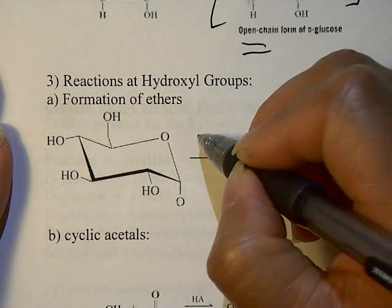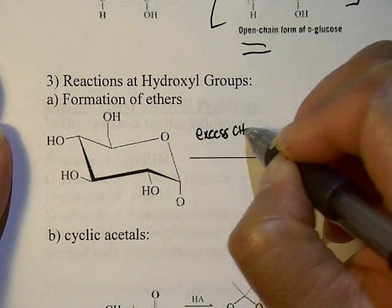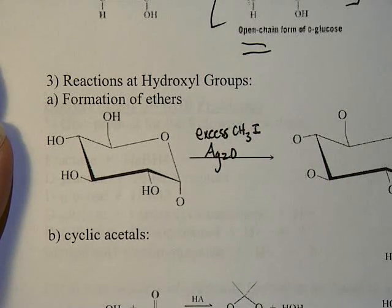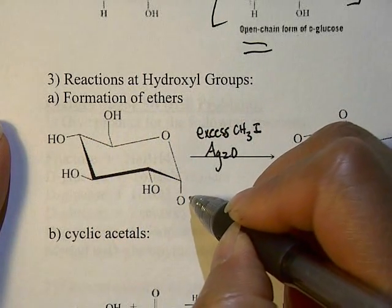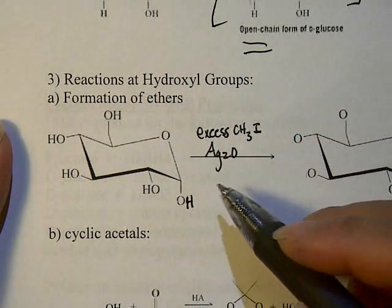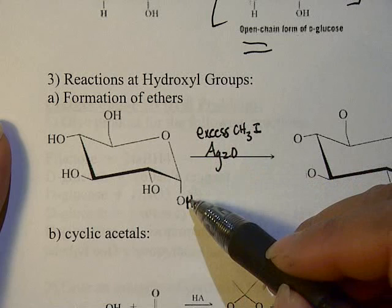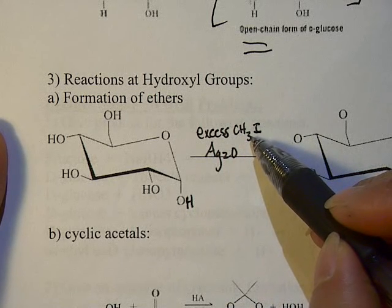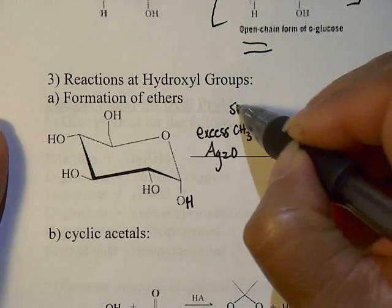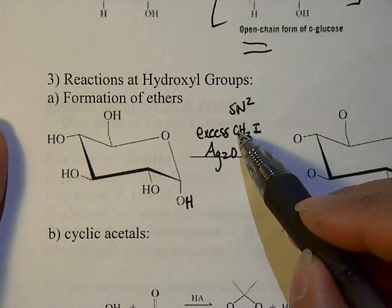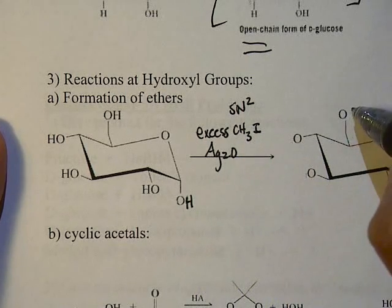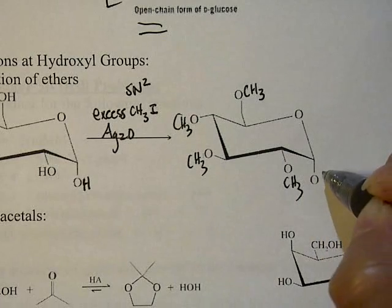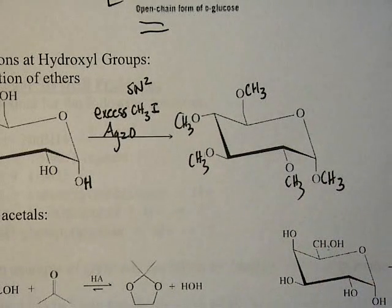One of the reactions in your book for forming ethers is using excess methyl iodide with silver oxide. Whatever monosaccharide you're working with, the silver oxide acts as a base to deprotonate the hydrogen, and then the methyl iodide — a very reactive, very dangerous alkyl halide — undergoes an SN2-type reaction where the oxygen attacks the methyl and kicks out the iodide. So all the alcohols will have a methyl group attached to the oxygen, forming ether products.